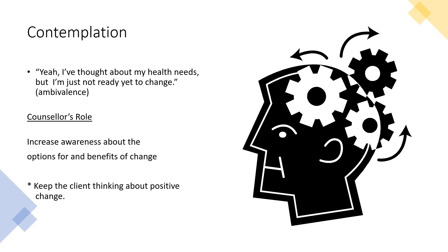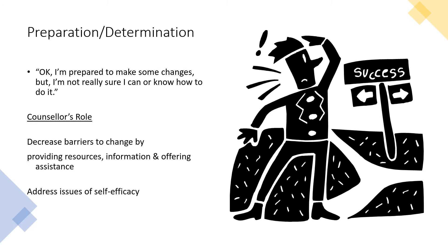At the contemplation stage, the person is thinking about it but not quite ready to change yet - this is the ambivalence period, focusing on pros and cons and increasing awareness of the benefits of change. At the preparation/determination stage, the person is making their mind up and preparing to make changes. Our role is to support them in decreasing barriers to change by providing resources, information and assistance, while addressing issues of self-efficacy - putting them in charge of what they're intending to do.